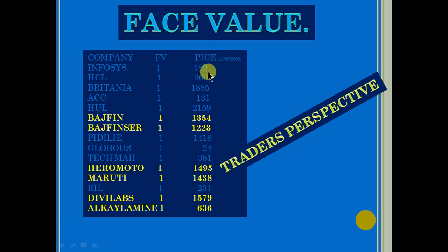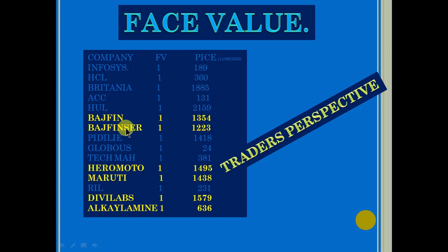Now the point is — whether you buy with a face value of 2, 3, 4, 5, 10 or whatever — when you consider it as 1, if you buy 10 shares it will become only 18,900 rupees and so on. Now take Bajaj Finserv and Bajaj Finance: when converted to face value of 1, the prices of both come to approximately 1354 and 1223 — a similar price range, whereas in raw terms one is 6000 and the other is 3000 something.